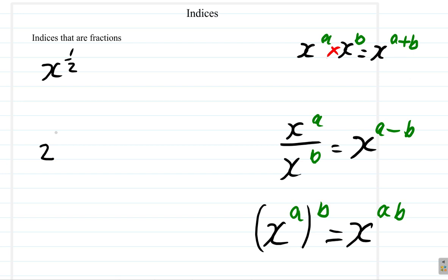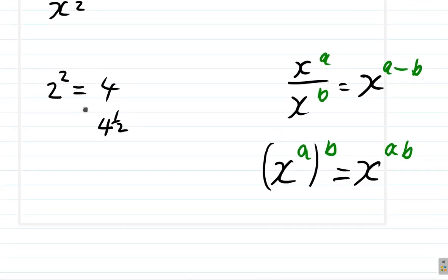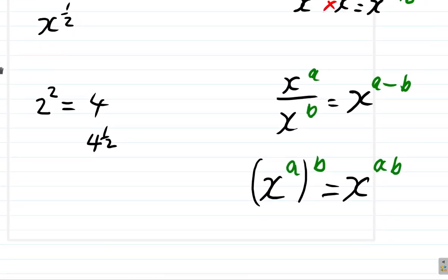We know that if we have 2 to the 2, 2 squared is 4, right? Now, suppose we want 4 to the half — what does that give us? Let's look at the third law and see if we can figure this out.